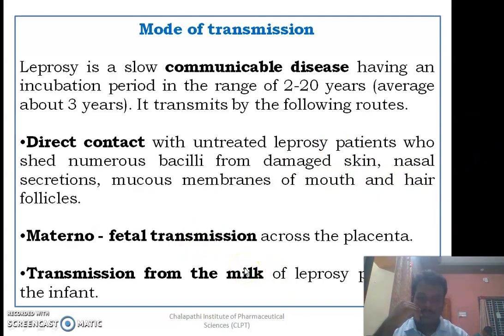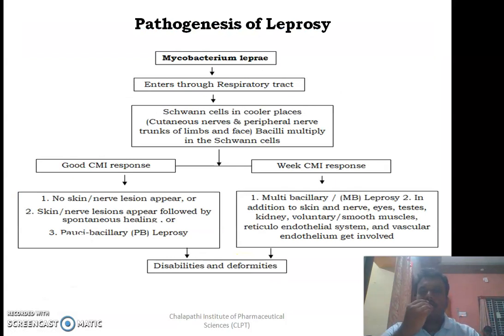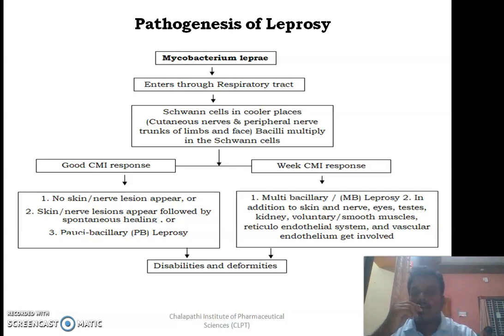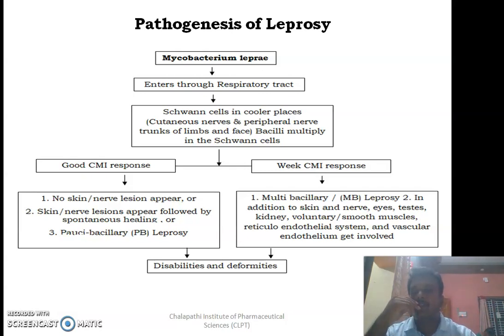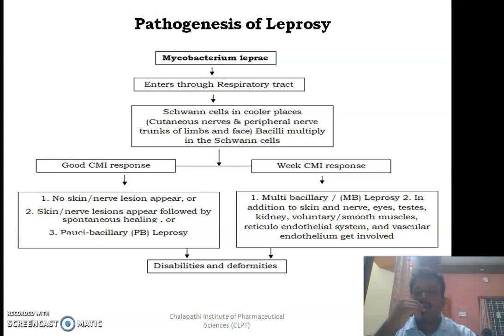In pathogenesis, Mycobacterium leprae is shed by various routes from infected individuals. When it enters an uninfected person's respiratory tract or other cool parts of the body, Schwann cells present in those cooler regions try to engulf the bacilli but are unable to kill them due to the inflammation developed against the bacteria. Schwann cells are a type of macrophage — we call macrophages by different names based on the tissue where they are present.